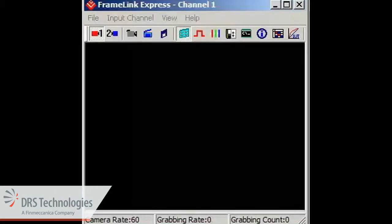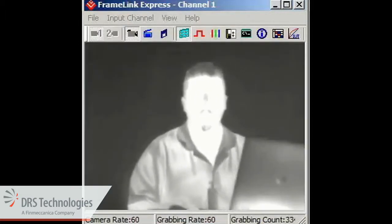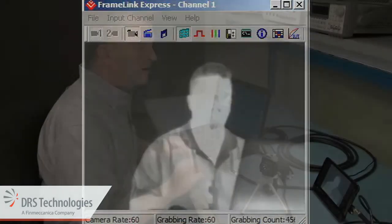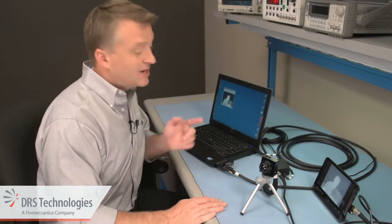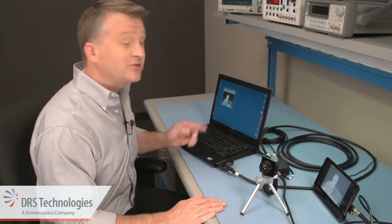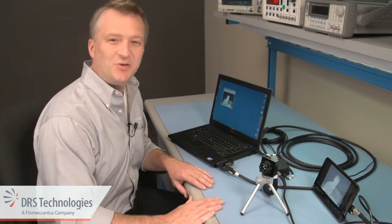Once the capture card software has launched, bring up the digital image in your software. There you go. Now you can view the analog out and the digital out at the same time. Thanks for watching.